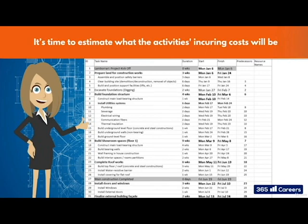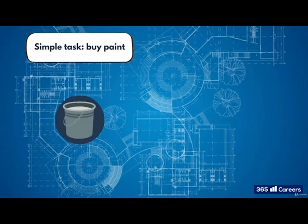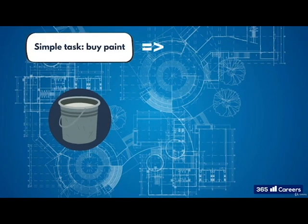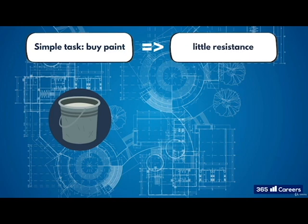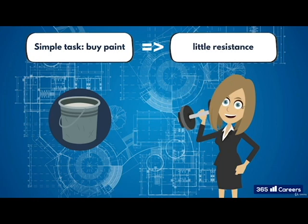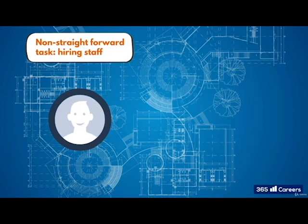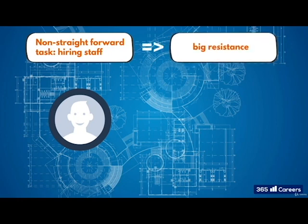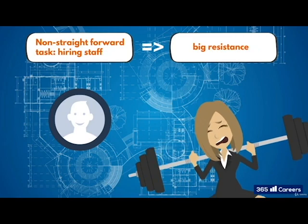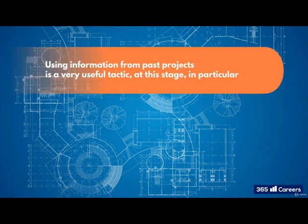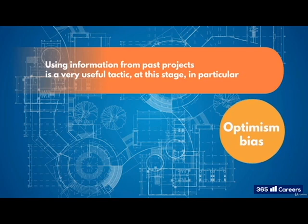Non-straightforward processes can rear their head here. Some tasks, like buying paint, are simple to estimate. And tasks which you may have estimated during a previous project, like using a particular HR company, can be worked out with little resistance. However, with other items you may have to combine the information you have available with professional estimations from your team. Sometimes you have to negotiate with vendors too — some of these can take days or even weeks if many different people need to be contacted. Using information from past projects or activities by the organisation is a very useful tactic at this stage. And of course, don't forget about the optimism bias and adding buffers.